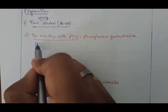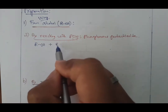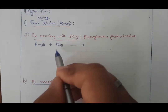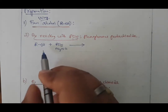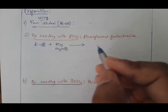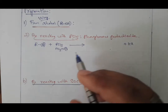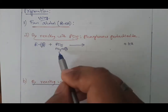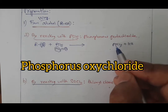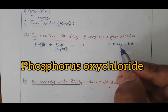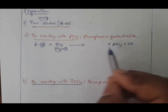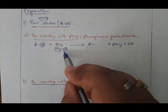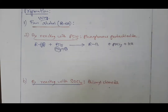For method A, you take alcohol ROH and react it with PCl5. PCl5 can be broken down as PCl3 + Cl + Cl. One Cl goes with H to form HCl as a byproduct. The O from the alcohol goes with PCl3 to form POCl3, known as phosphorus oxychloride. What is left is R, which combines with the leftover Cl to form alkyl chloride, RCl.